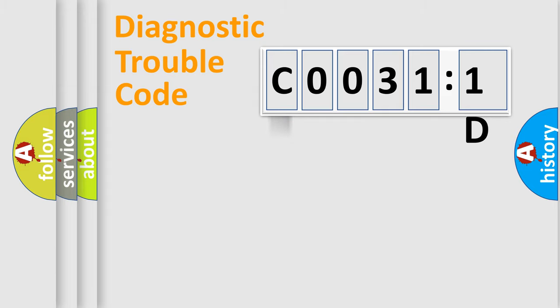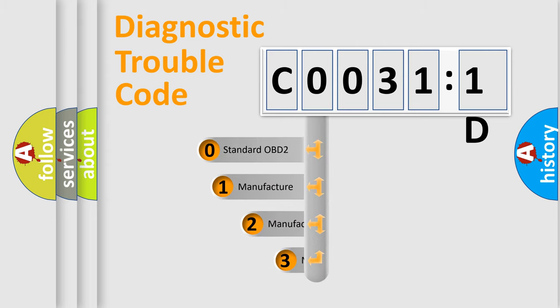Powertrain, Body, Chassis, Network. This distribution is defined in the first character code.